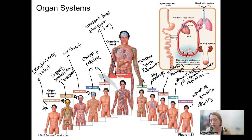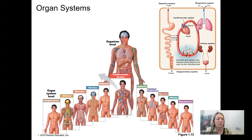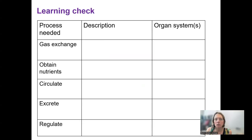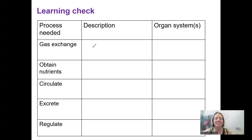If one system is dysfunctional, sometimes another one can make up for it, but something else is going to have to respond. I'd like you to do this learning check: for each organ system, write down a more thorough description than what is listed here. What do I mean by 'gas exchange'? And then what organ system or systems — in some cases there's more than one — are involved in each process?